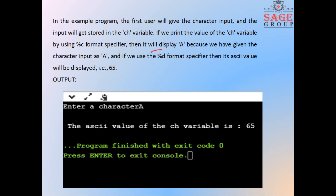If you want to print the ASCII value of the entered character, you have to give %d format specifier. Then it will display the ASCII value of the input character. Here we have entered character 'A' and its ASCII value will be 65.